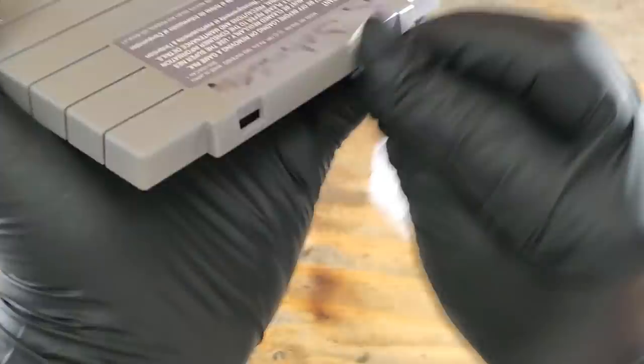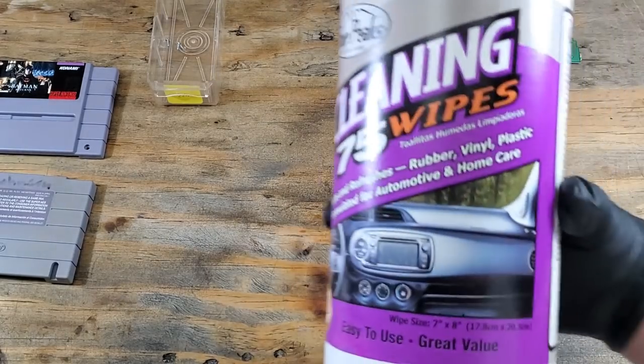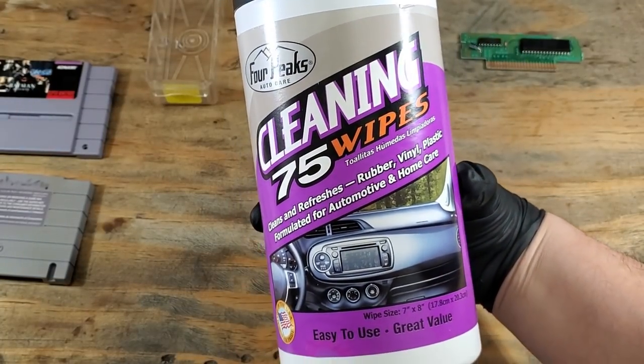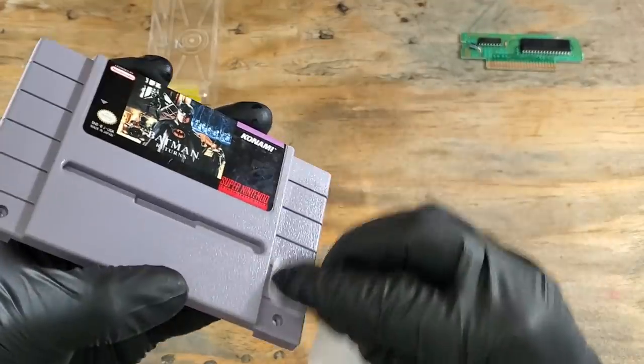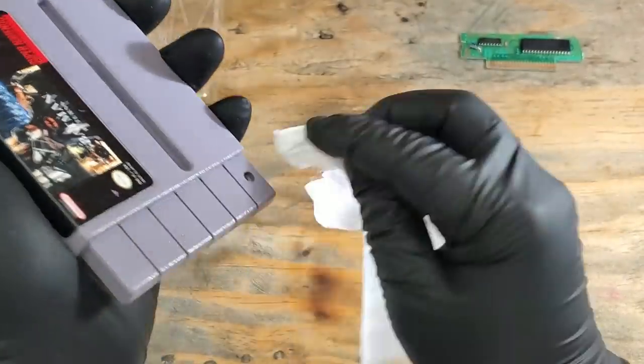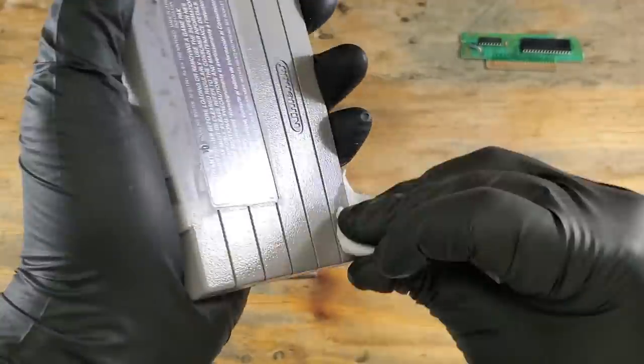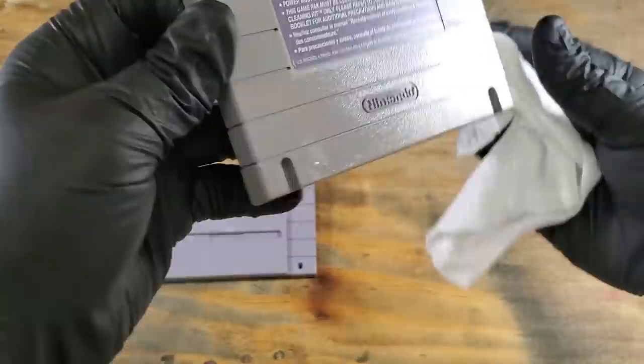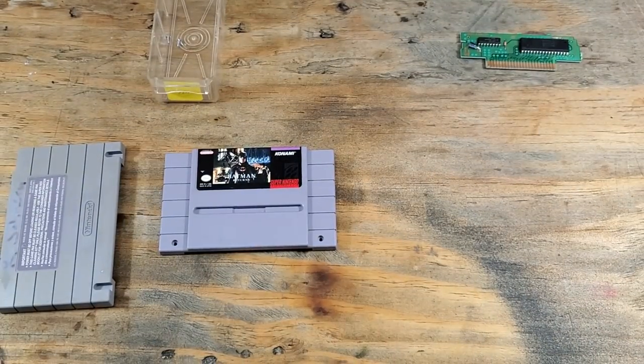I'll just clean it one more time with a Clorox wipe and move on with the cleaning. For the final part of this cartridge cleaning, I'm going to use some automotive cleaning and protectant wipes. This will add a protectant layer and bring back a little bit of that shine. Again, we want to be careful around those labels. After that, we'll put the cartridge back together and we're done.